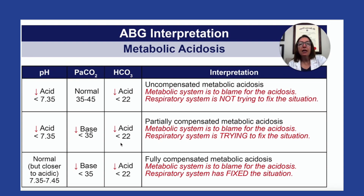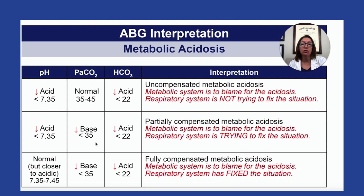However, with HCO3, we see that it is low, under 22. So the metabolic system is to blame for the acidosis, and the respiratory system is trying to fix the situation. It's becoming more basic to help counteract this acidosis. So we have partially compensated metabolic acidosis.